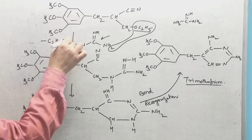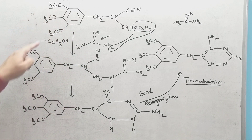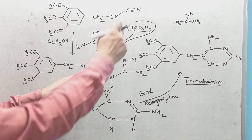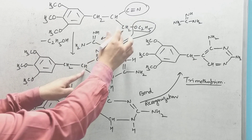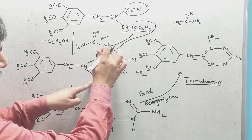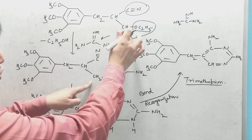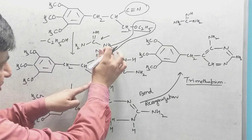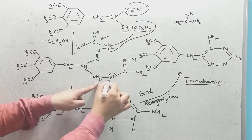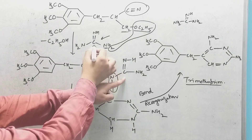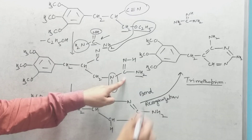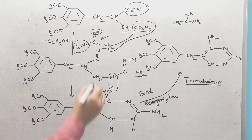In this reaction, ethanol (C2H5OH) is eliminated. The intermediate now has the trimethoxy benzene portion connected via CH2-CH, followed by CN, then CH2-NH-C(=NH)-NH2. The CN group then undergoes bond fission to form C=NH.